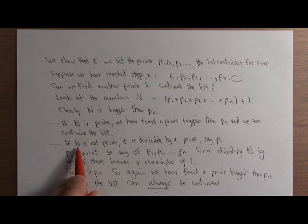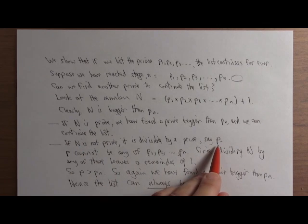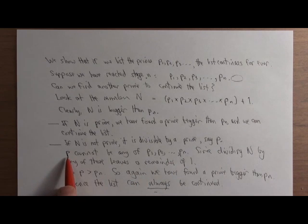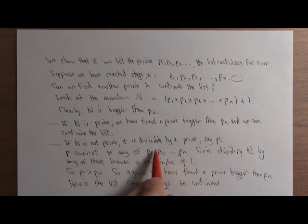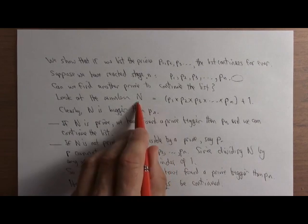The alternative was that N wasn't prime, in which case it's divisible by a prime and we call it p. Now, that prime p can't be any of these. Why? Well, this is why we defined N the way we did.